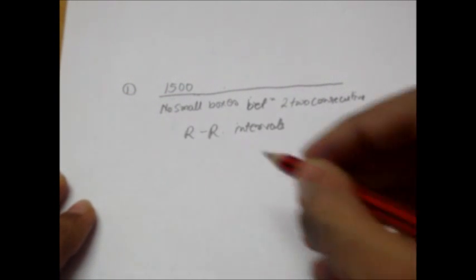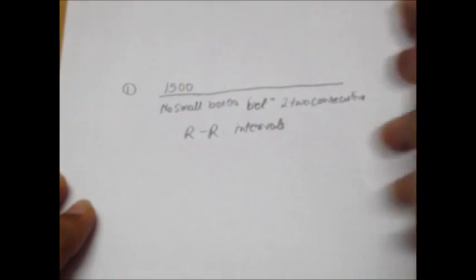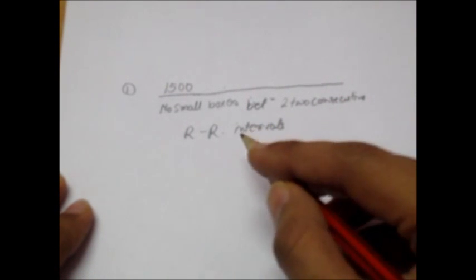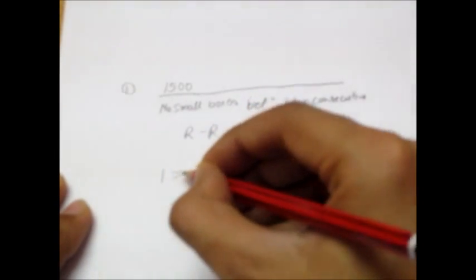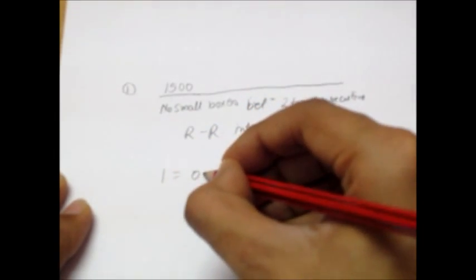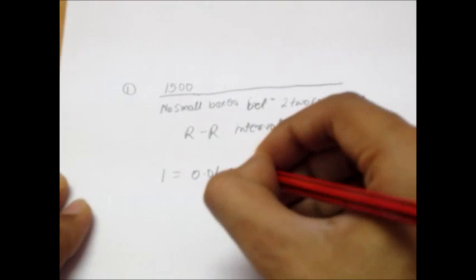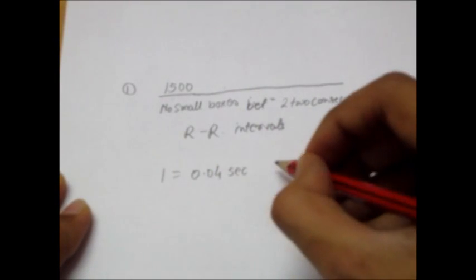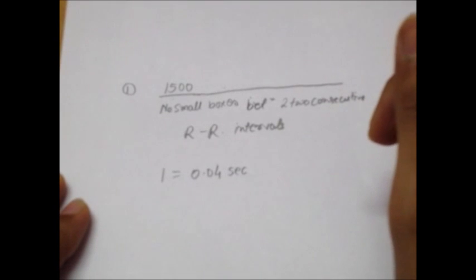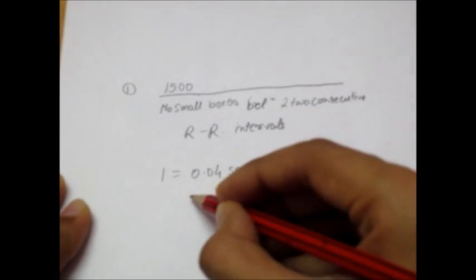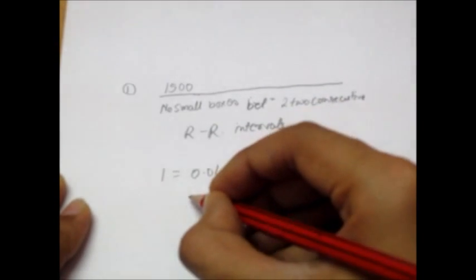How does it come? Because one small box translates into 0.04 seconds in an ECG with speed of 25 mm per second. So if we multiply 0.04 seconds by 1500, we will get 60 seconds.